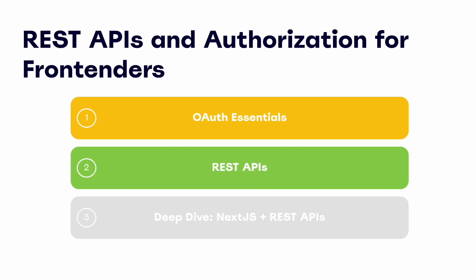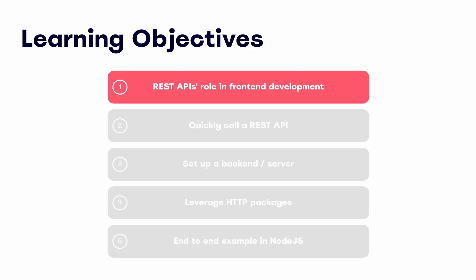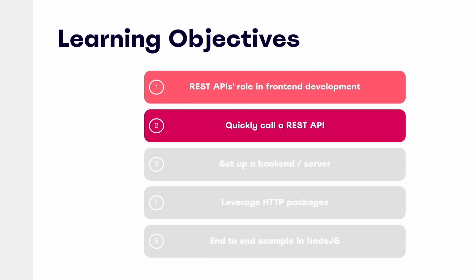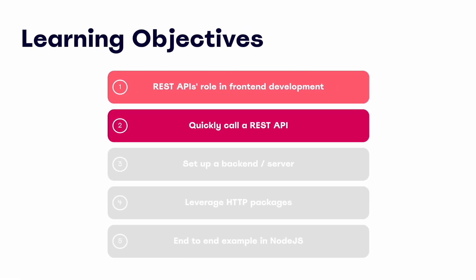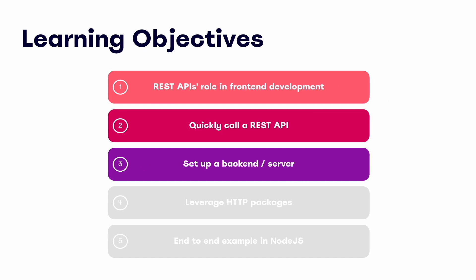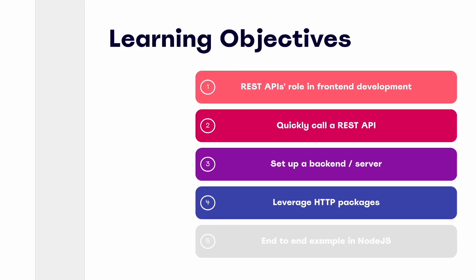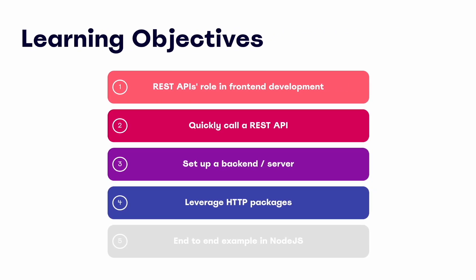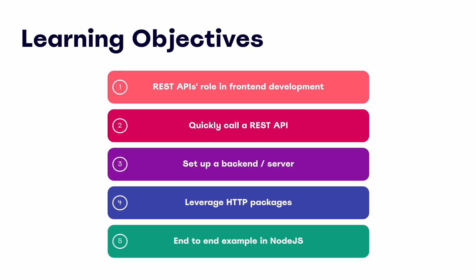Before we dive in, let's quickly walk through today's five learning objectives. First, we'll cover REST API's place in front-end development and why they're valuable. Second, we'll quickly make a sample API request. Third, we'll walk through how to set up our own back-end and server. Fourth, we'll cover some basics on leveraging HTTP packages in Node. And finally, we'll demo an example script.